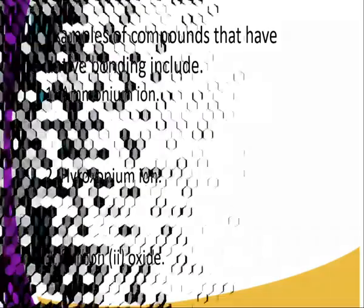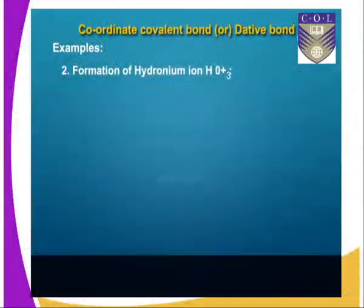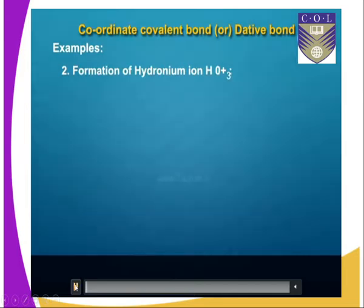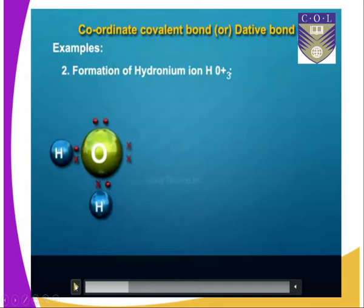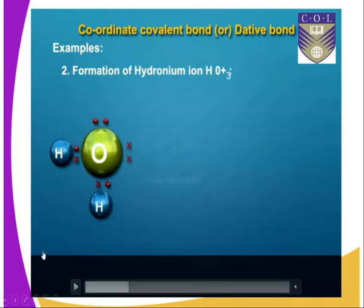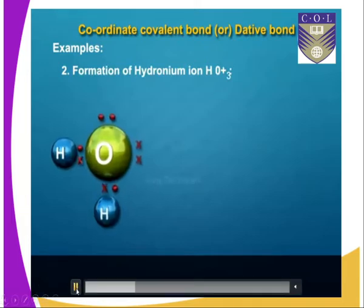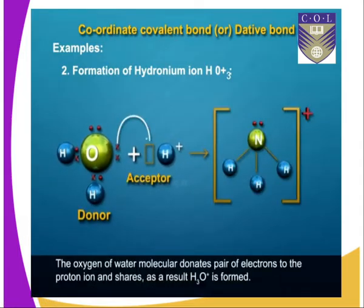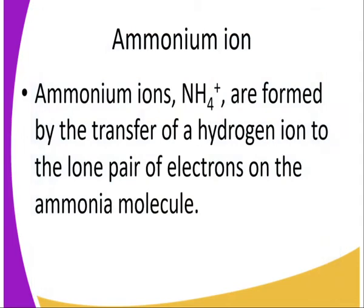From the diagram that we have here, you can see that the hydrogen atom is accepting two electrons which are derived from water. Water contains two hydrogen atoms which are bonded covalently to one oxygen atom. The hydrogen ion accepts the lone pair of shared electrons, therefore forming a covalent or dative type of bond.